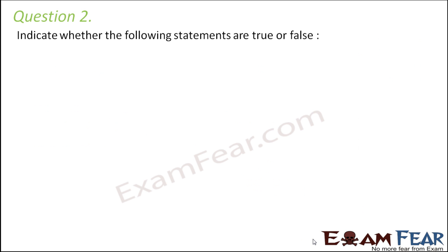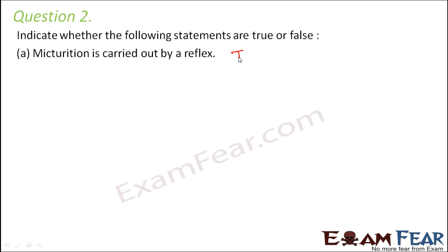Question number 2: indicate whether the following statements are true or false. First statement — micturition is carried out by a reflex. Micturition is nothing but urination. That is absolutely true, because there is an exchange of signals and a response received from the brain. The stimulus comes from stretch receptors on the walls of the urinary bladder, so this is carried out by reflex.